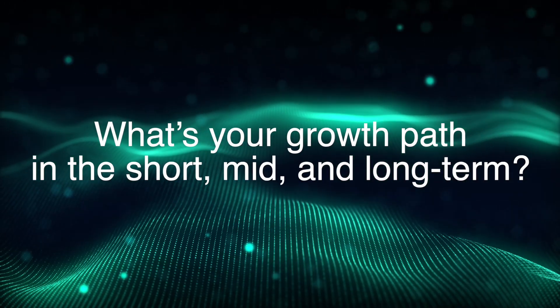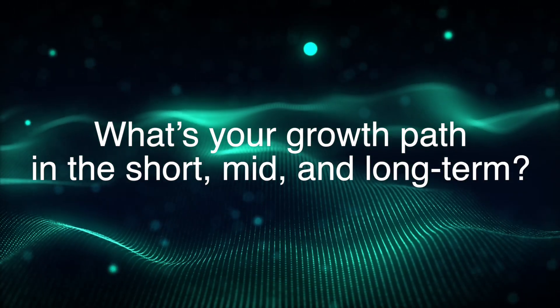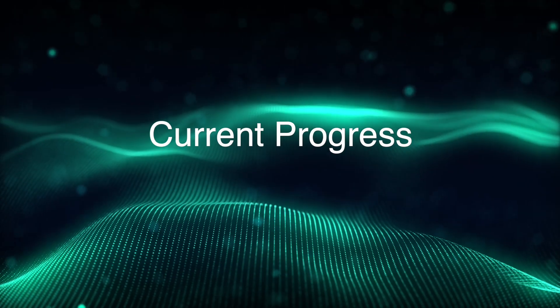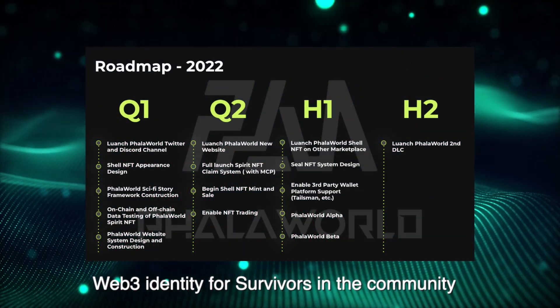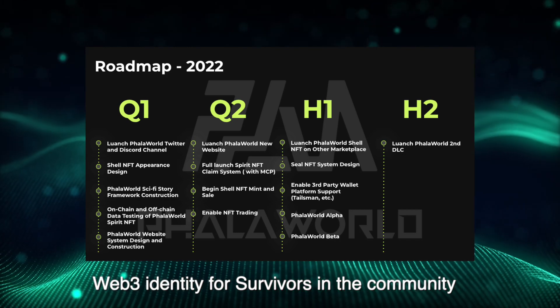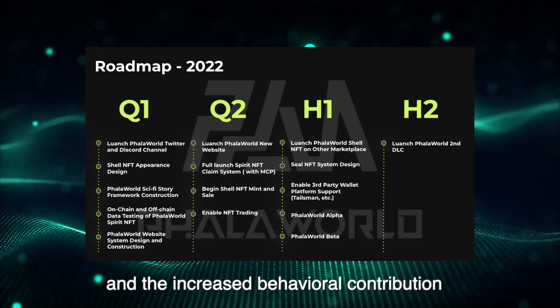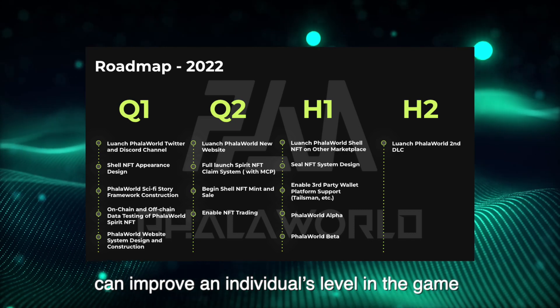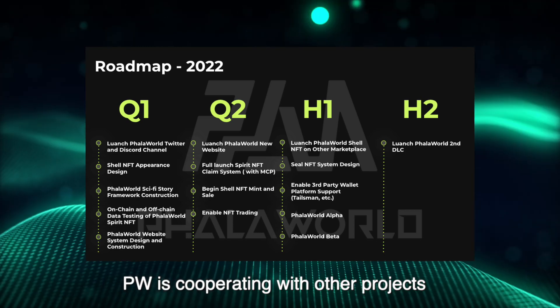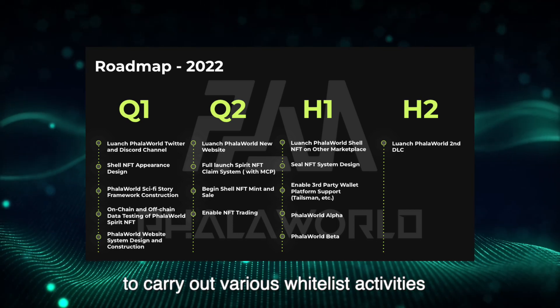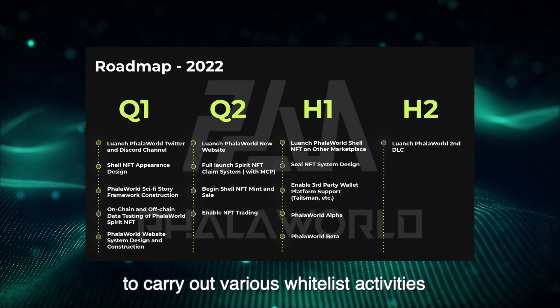What's your growth path in the short, mid and long term? Current progress: Philot World uses MCP to create Philot World's exclusive Web3 identity for survivors in the community, and increase behavioral contribution can improve an individual's level in the game. It is currently in final testing. At the same time, Philot World is cooperating with other projects to carry out various whitelist activities.